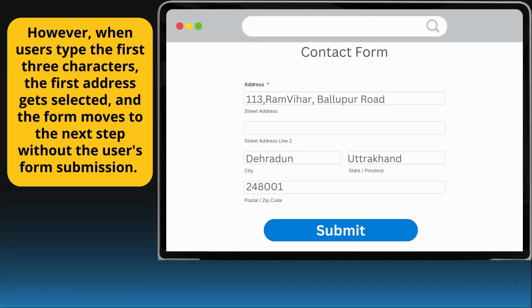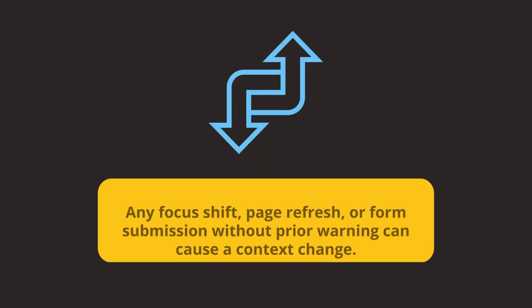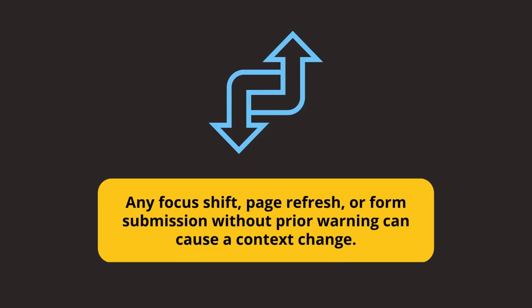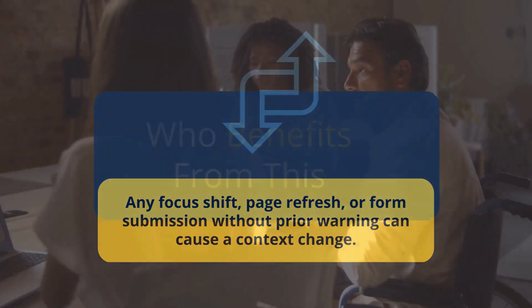However, when users type the first three characters, the first address gets selected and the form moves to the next step without the user's form submission. Any focus shift, page refresh, or form submission without prior warning can cause a context change.